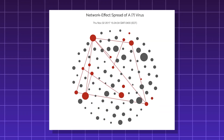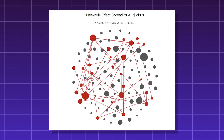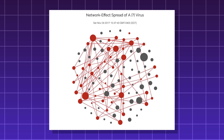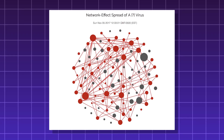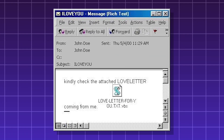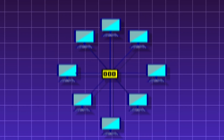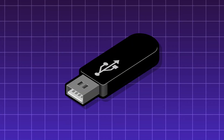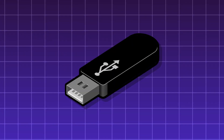The worm's replication activity alone can clog up bandwidth and cripple corporate network infrastructure. They are extremely difficult to contain because they have multiple ways of spreading, whether through emails, networks, or even USB drives.